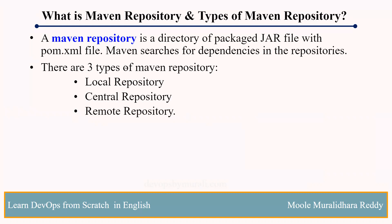The local repository is nothing but your local machine. For example, you are using your local server — CentOS, Red Hat, or Amazon Linux. If you maintain your repository locally, Maven will check there first. If the dependency is not available, it will go to the central repository.